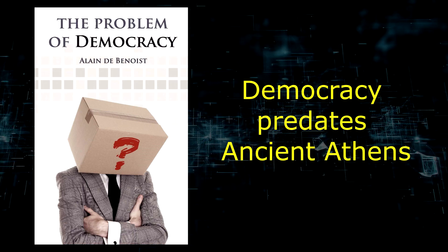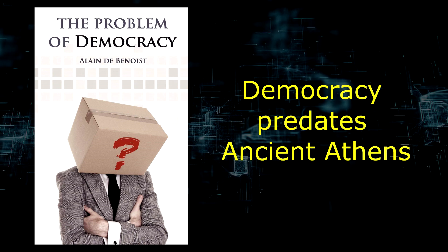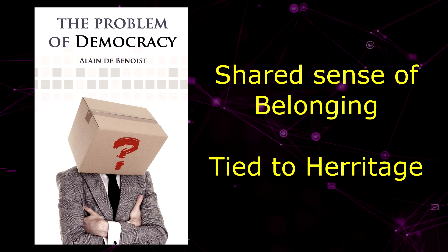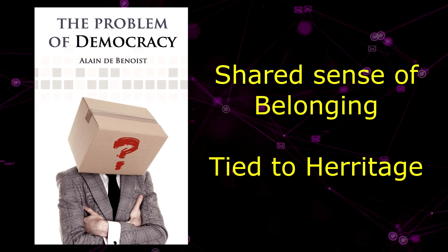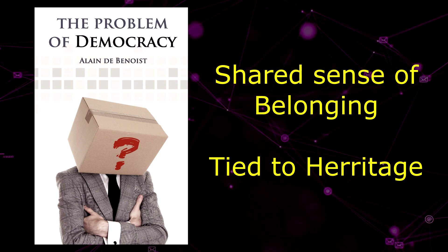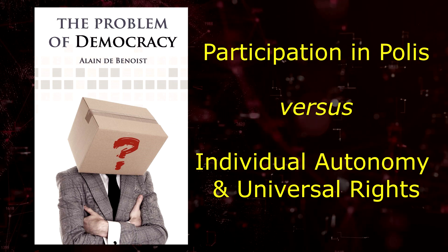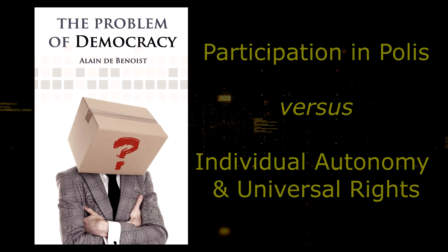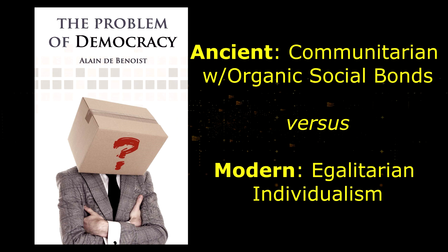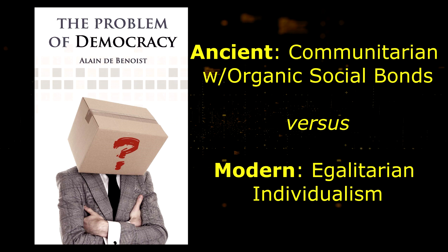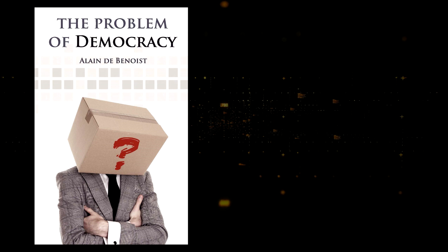He challenges the common view that Athenian democracy was the first true democracy, arguing many pre-Athenian societies had democratic features like popular assemblies and elected leaders. Benoit states that Athenian democracy was based on a shared sense of belonging and citizenship tied to one's origin and heritage, rather than abstract individual rights. He contrasts the Athenian view of liberty as participation in the collective life of the polis to the modern notion of individual autonomy and universal rights.